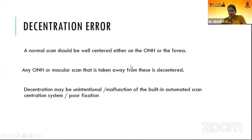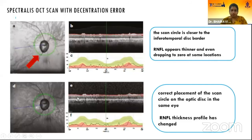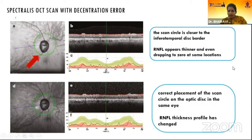A normal scan should be well centered either on the ONH or the fovea. Any scan taken away from these locations is called a decentered scan, which may be unintentional, due to malfunction of the built-in automated scan centration system, or poor fixation. In this Spectralis OCT scan showing decentration error, the scan circle is closer to the inferotemporal disk border, so the RNFL will appear thinner and may even drop to zero at some locations. With correct placement of the scan circle on the optic disc in the same eye, the RNFL profile returns to normal.